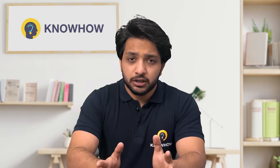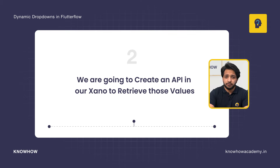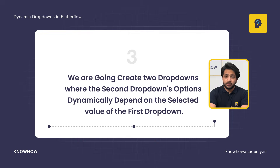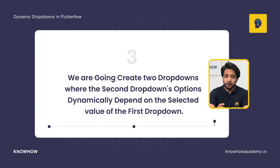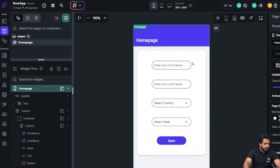Let me tell you what you are going to learn in this video. We are going to create dynamic drop downs where the options come from an API. We will create the API in Zeno to retrieve those values, and we will create two drop downs where the second drop down's options are dependent on the value selected in the first one.